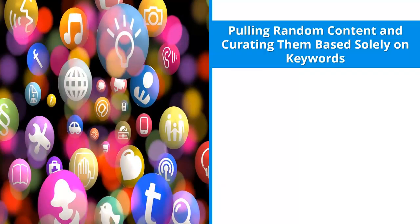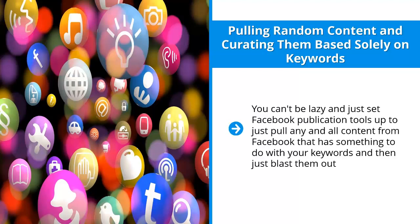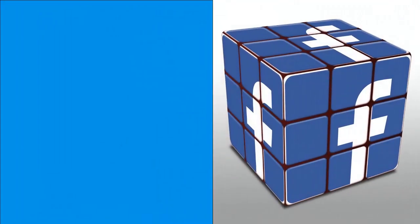Mistake five: pulling random content and curating it based solely on keywords. You can't be lazy and just set Facebook publication tools up to pull any and all content from Facebook that has something to do with your keywords and then blast it out. You're just spamming when you do that. You have to be very deliberate and careful regarding the kind of content, whether curated or not, that you will associate with your brand.